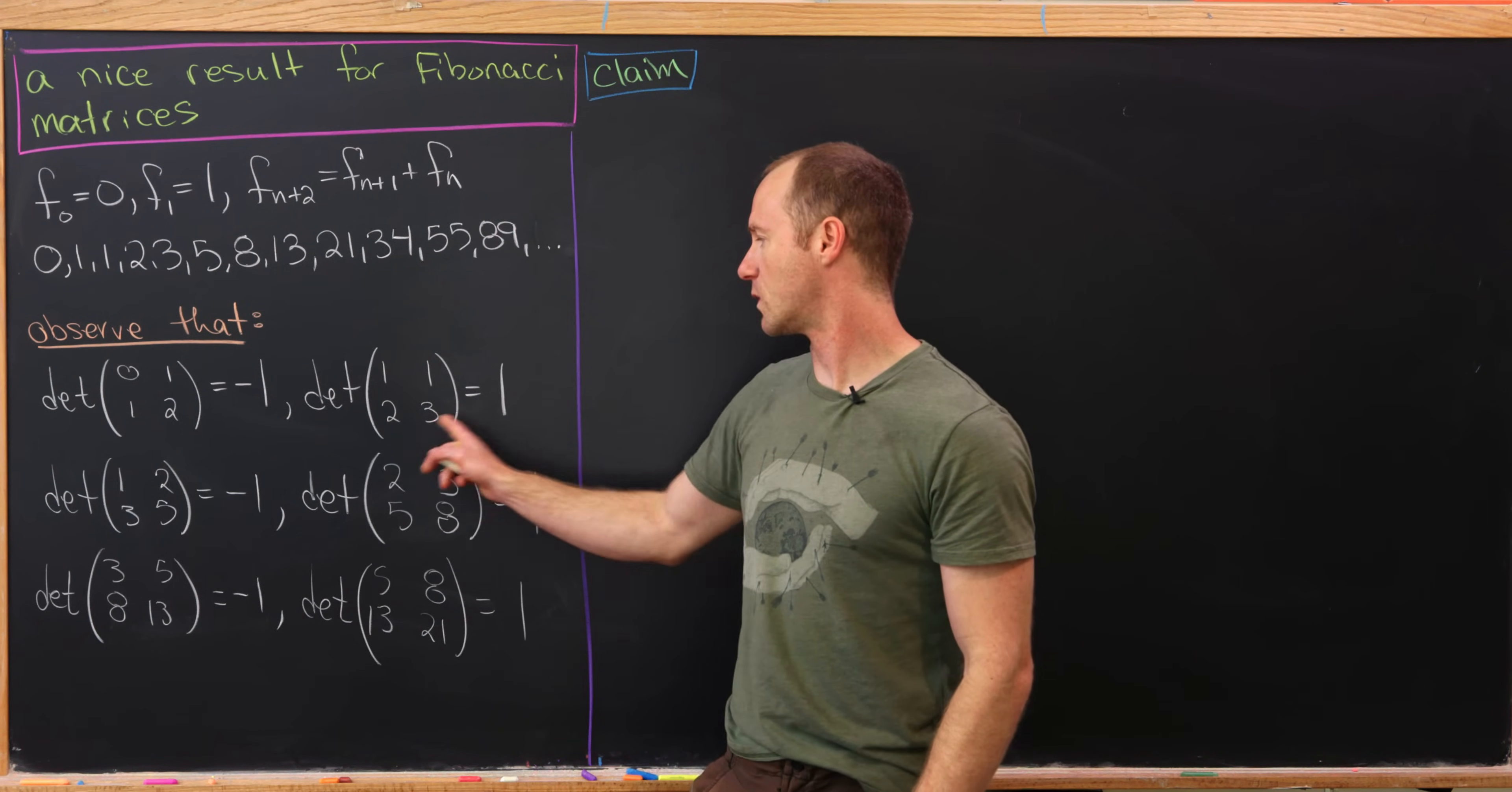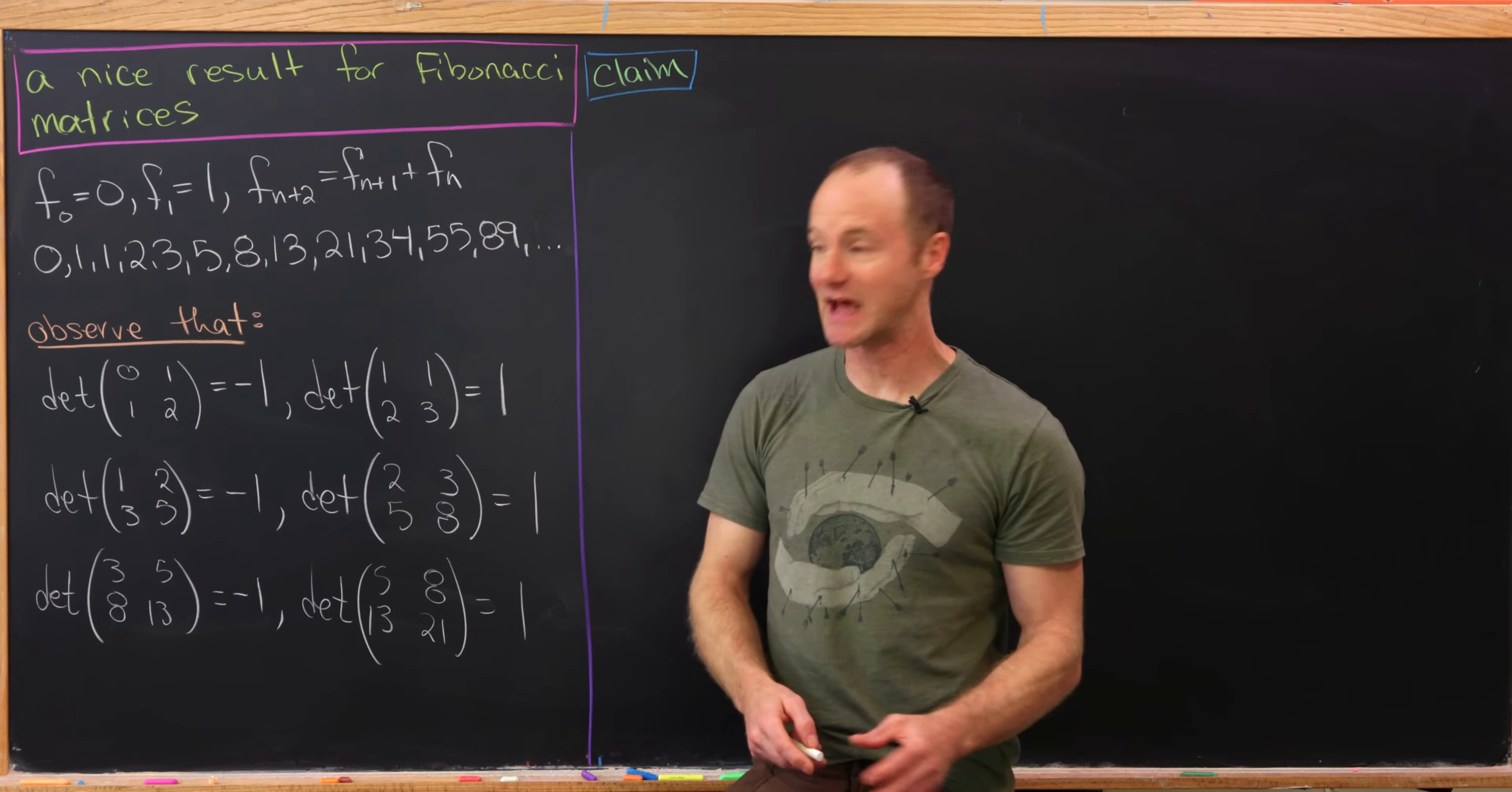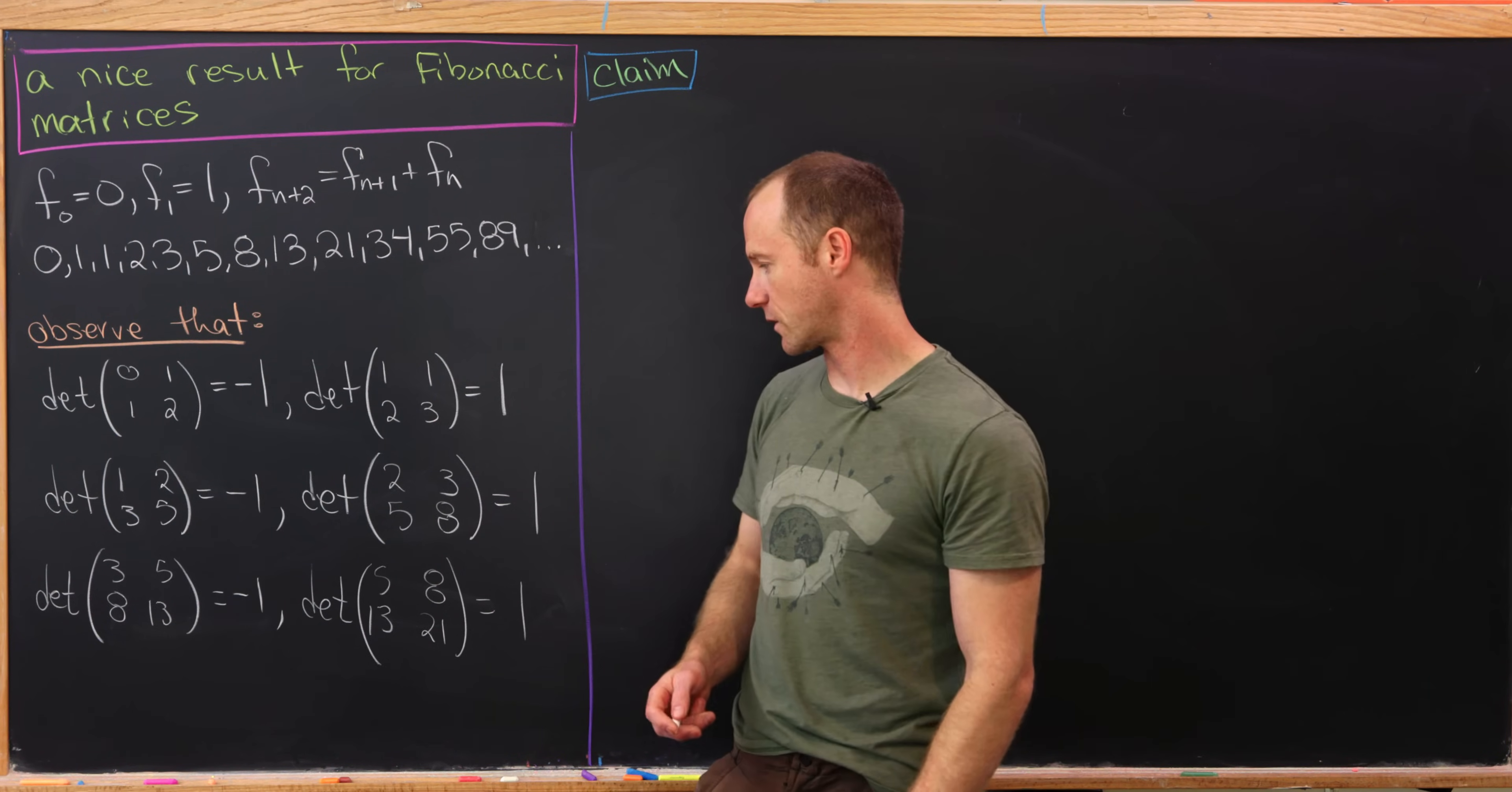Similarly the determinant of 1, 1, 2, 3 is 1, the determinant of 1, 2, 3, 5 is negative 1, the determinant of 2, 3, 5, 8 is 1, and so on and so forth.